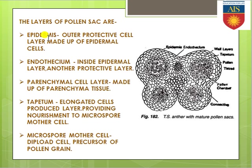First of all, epidermis is the outermost protective cell layer and it is made up of epidermal cells. Keep it in mind — epidermis is the outer protective cell layer made up of epidermal cells. Next, endothesium is another layer which is actually present inside the epidermis.